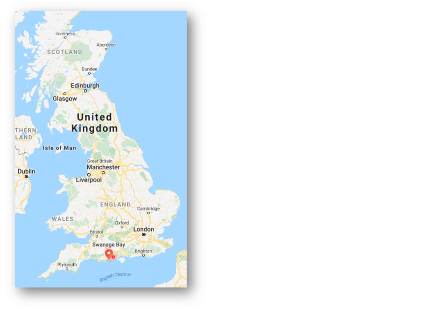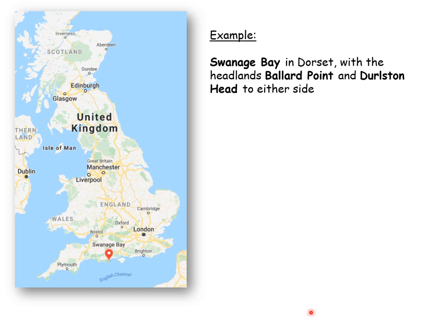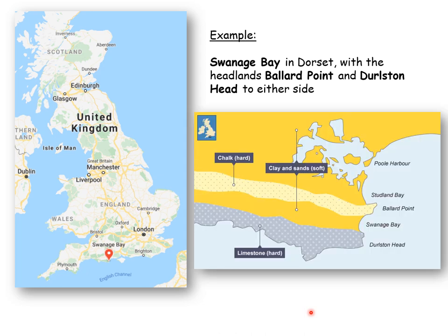Here is an example of a discordant coastline. We're going to go to Dorset in England and look at the area around Swanage Bay. Swanage Bay is in Dorset and has two headlands — Ballard Point and Durlston Head — to either side. Here is the harder rock, which is chalk, and another area of harder rock which is limestone, with soft clays and sands in between.